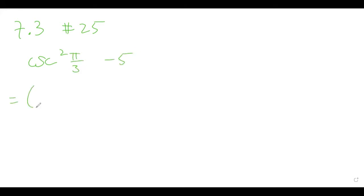So maybe what we can do first is rewrite this as cosecant pi thirds, and then the exponent we'll just put it on the outside, which is totally fine.